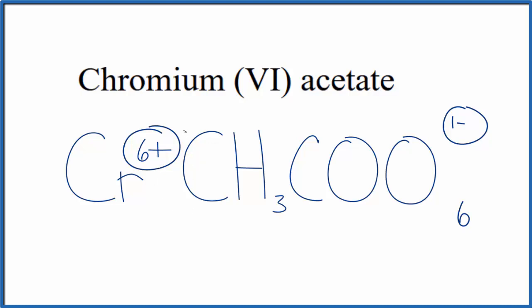We would need parentheses around the acetate ion, though, since we have 6 of them. So this is the formula for chromium(VI) acetate: Cr(CH3COO)6.